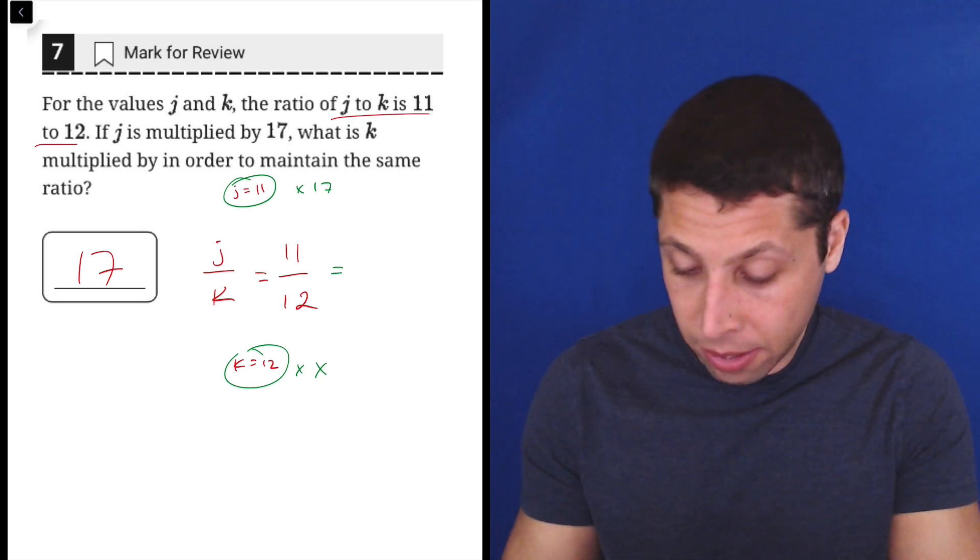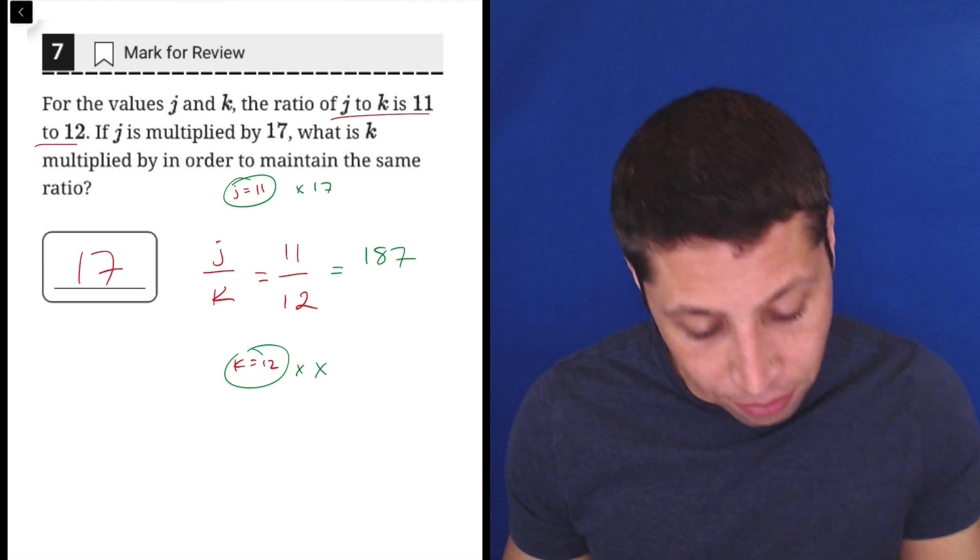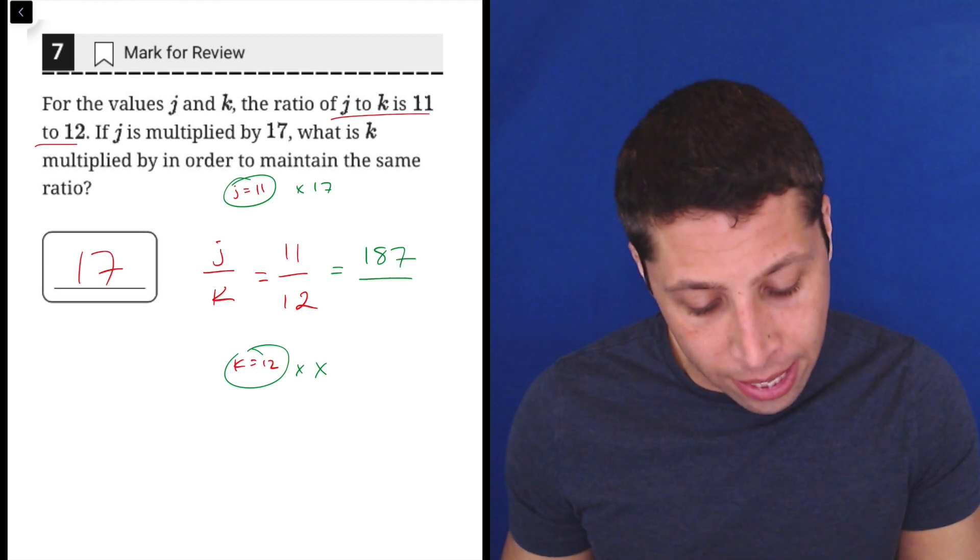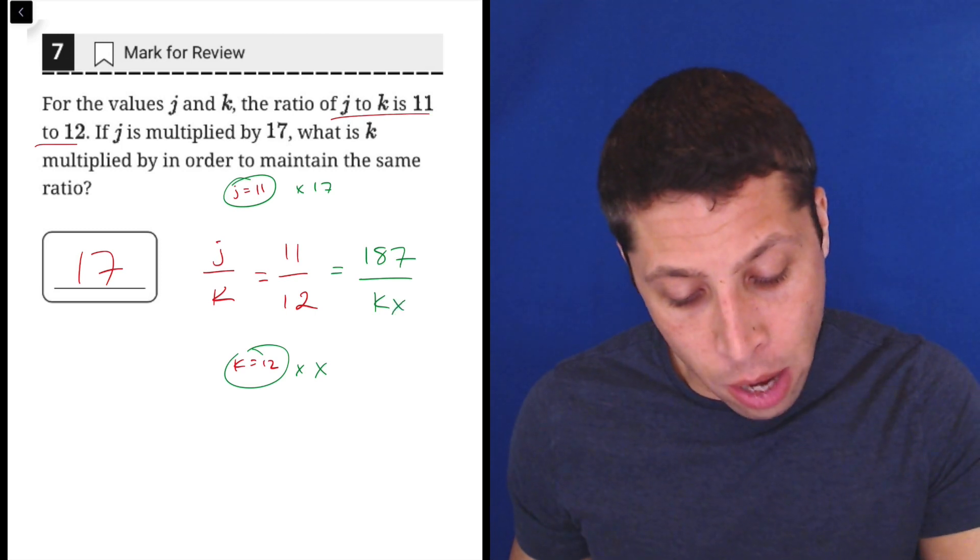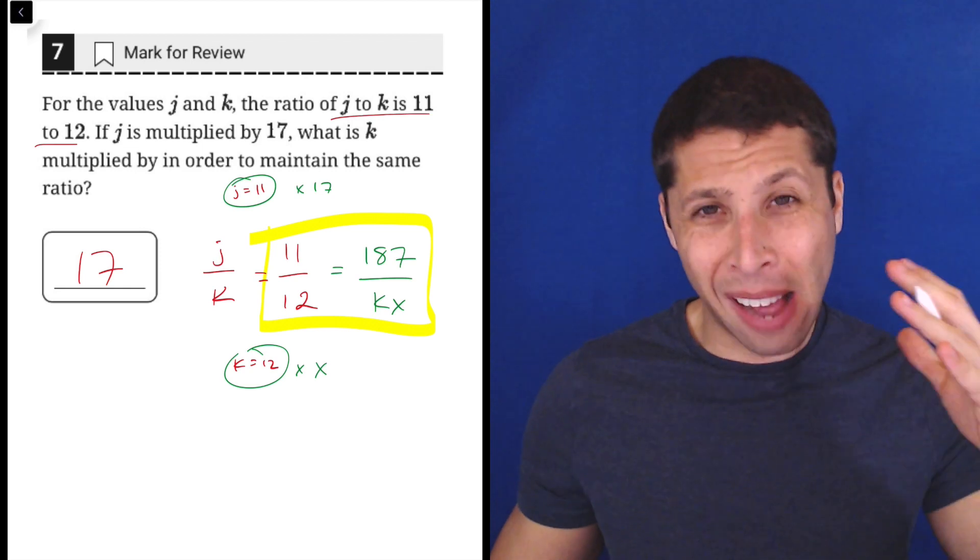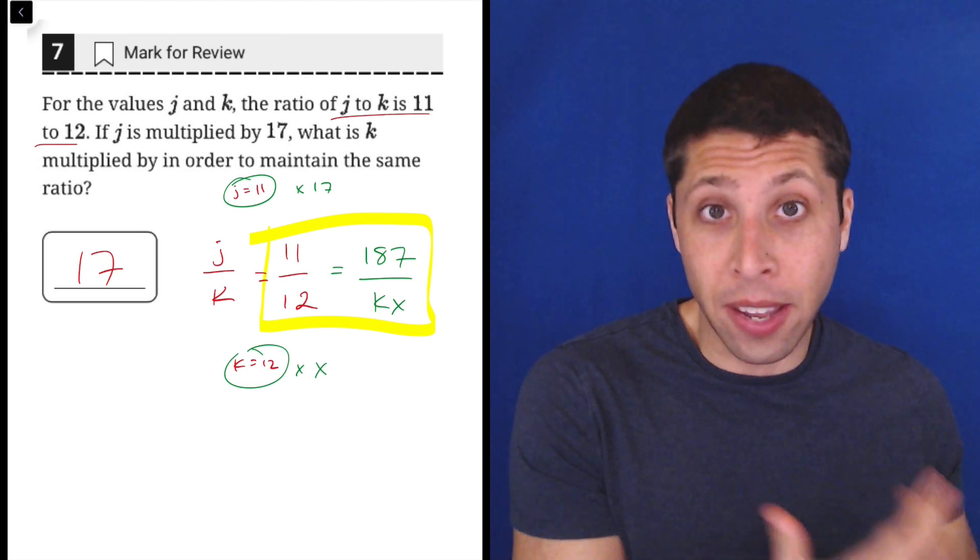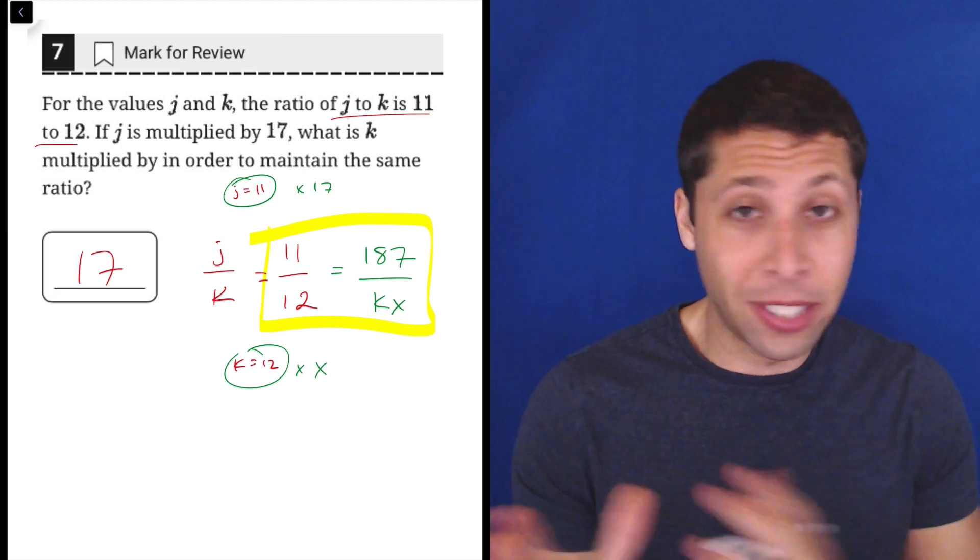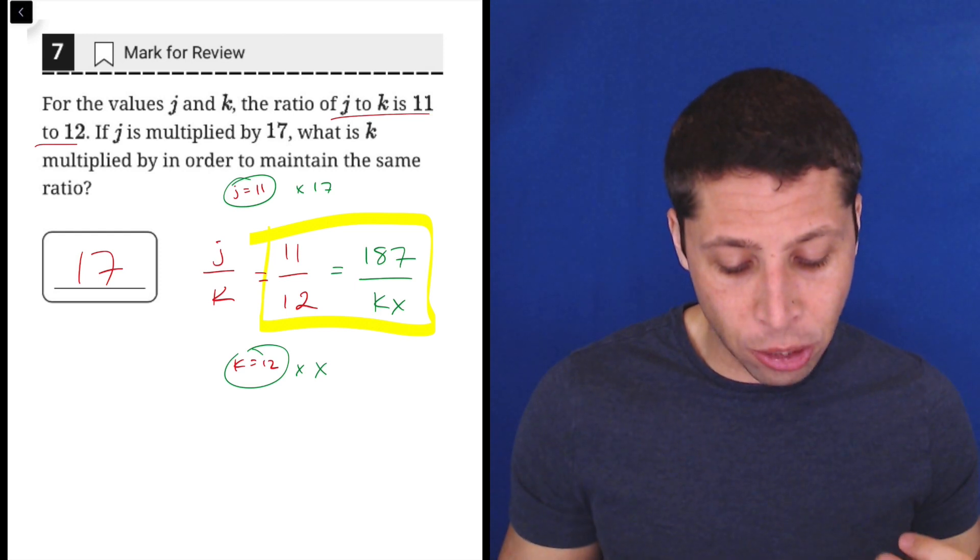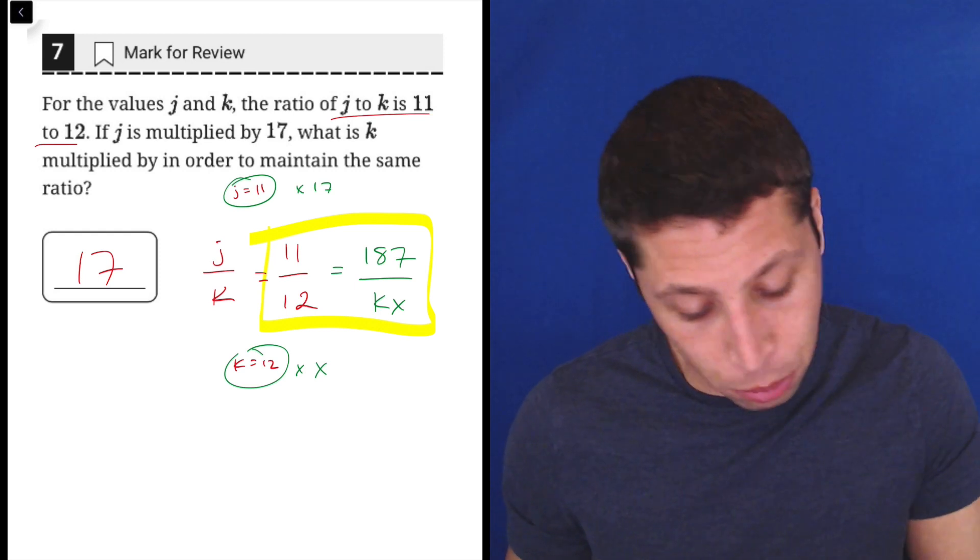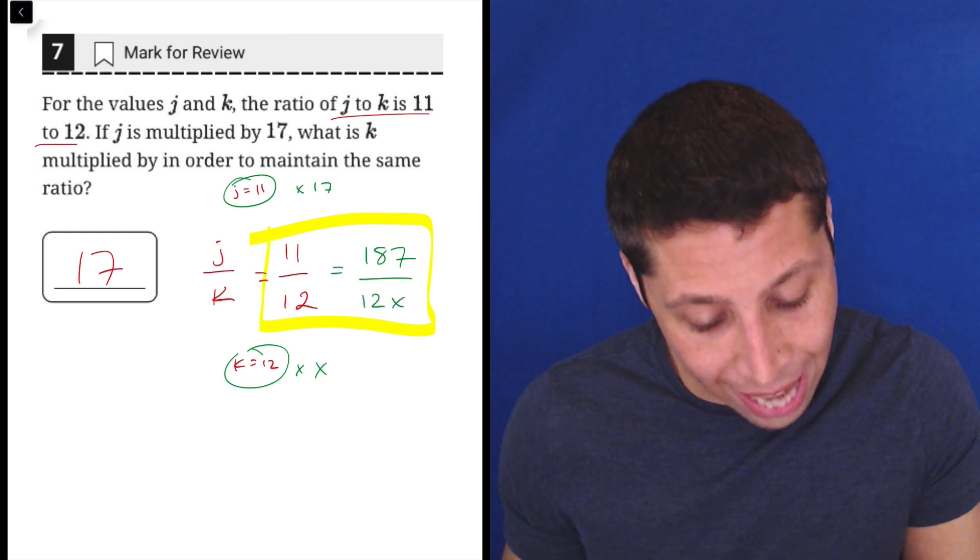So on the top, 11 times 17. I don't know that in my head, so we're going to just get that out of the calculator. That's 187. And so what they're really asking then is K times what will preserve this ratio? So now I'm looking here, I've got the ratio itself, 11 to 12, and I have a value for J that I made up and multiplied by 17 as instructed. And then my value for K, we need to preserve this ratio. So we should put K in as 12 here, so 12X is what it should be.